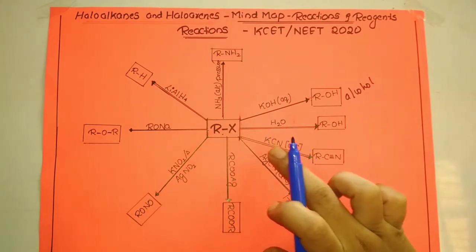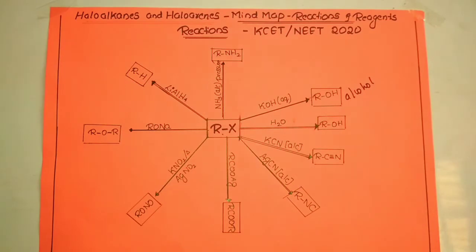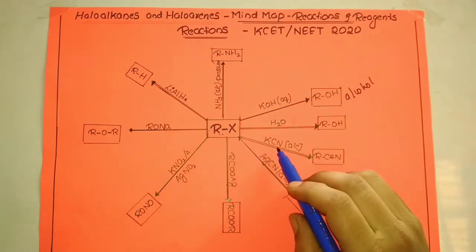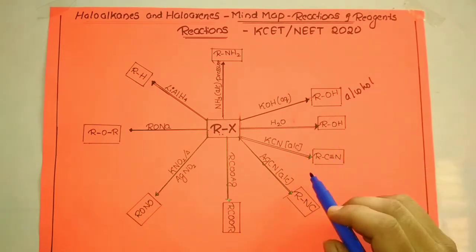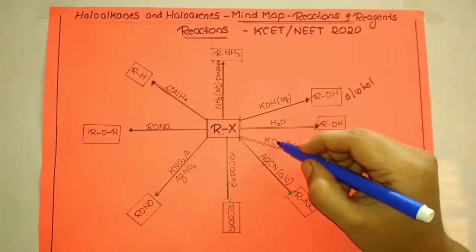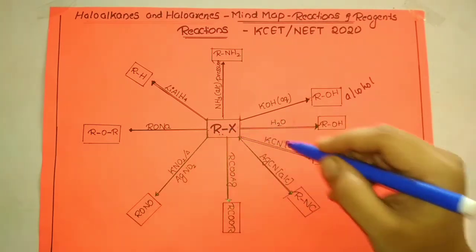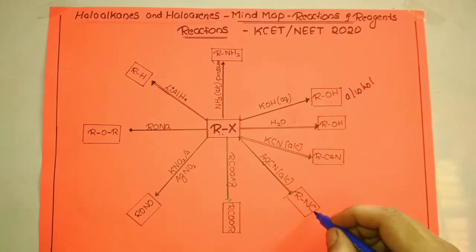When alkyl halide is treated with alcoholic potassium cyanide (KCN), we get the respective alkyl cyanide, also called alkyl nitrile. However, when alkyl halide is treated with alcoholic silver cyanide (AgCN), the product is alkyl isocyanide. If CN is given, it is cyanide; if NC is given, it is isocyanide.